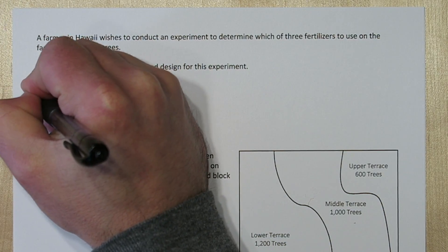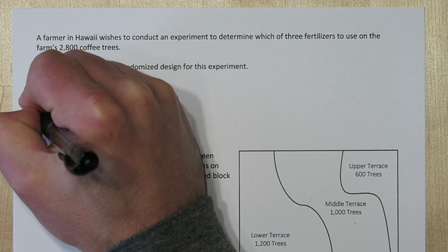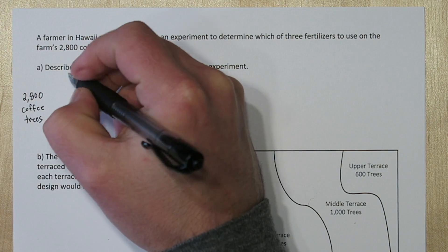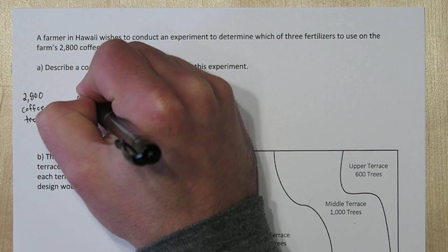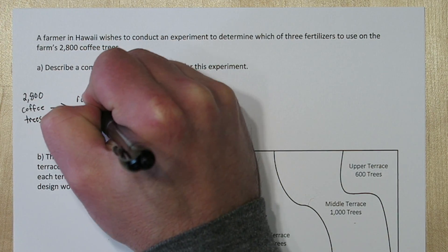I like to draw diagrams for my experimental designs. So we're going to start with the 2800 coffee trees, and then we're going to use random assignment to divide those trees into three groups.